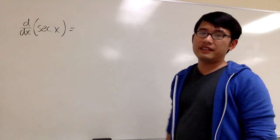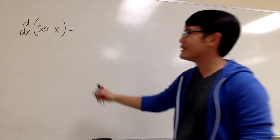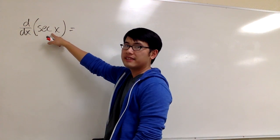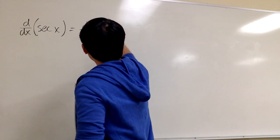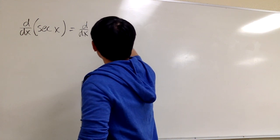Let's do the derivative of secant x. How can we do that? First thing, look at secant x as 1 over cosine. So this is taking the derivative as 1 over cosine x.